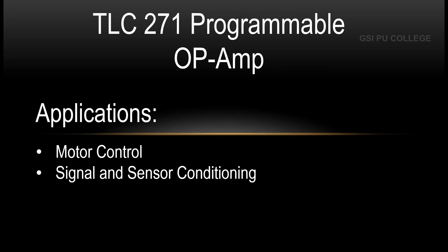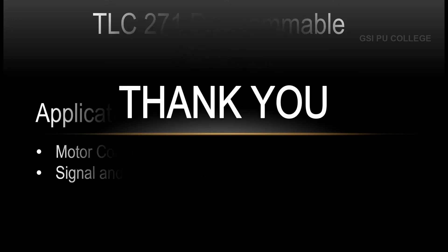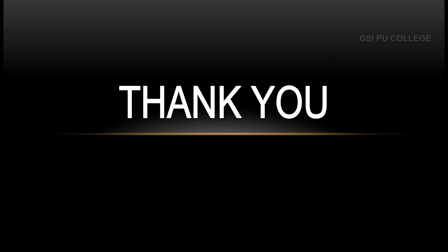Popular applications of these products are motor control and signal and sensor conditioning. A motor controller is a device or set of devices that helps in regulating the manner in which a motor works, including engaging the motor into forward or reverse rotation and protecting electrical fields. Signal conditioning is the manipulation of a signal in a way that prepares it for the next stage of processing — for example, thermocouple signals have very small voltage levels that must be amplified before they can be digitalized.